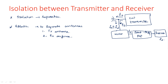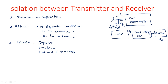Using separate transmitting and receiving antennas provides isolation. Alternatively, we can use devices for isolation such as a duplexer, circulator, matched T junction, rat race junction, or directional coupler. These are all duplexer-type elements studied in microwave engineering, which separate the transmitting and receiving signals.